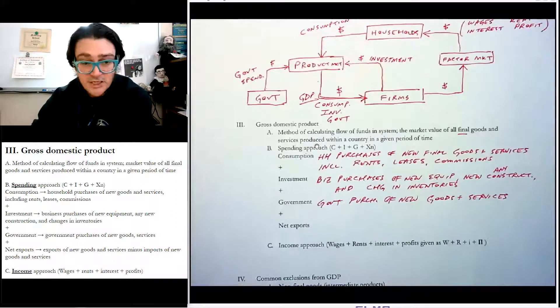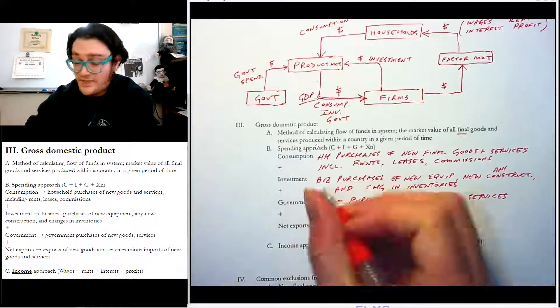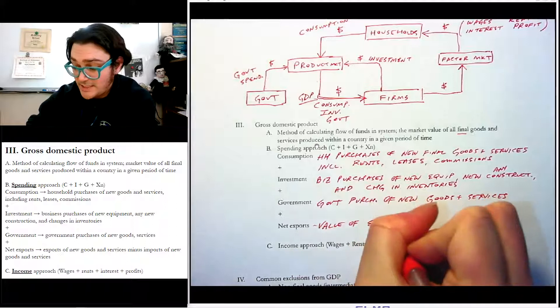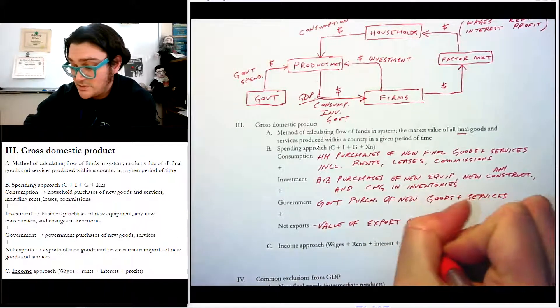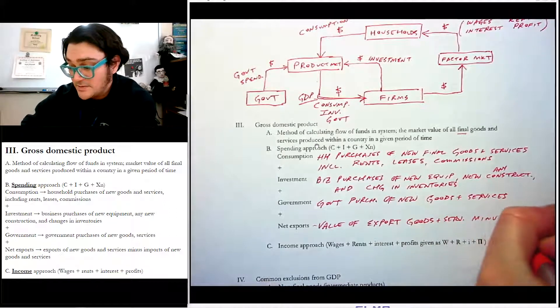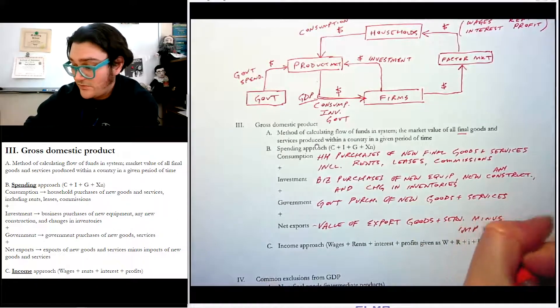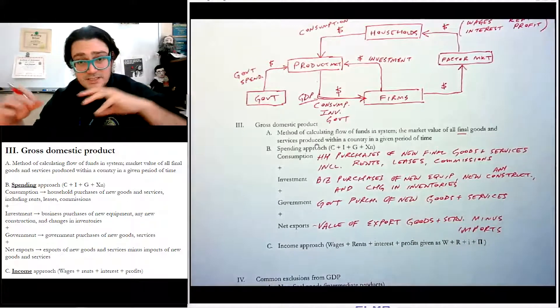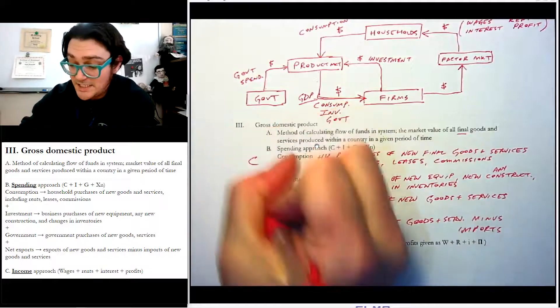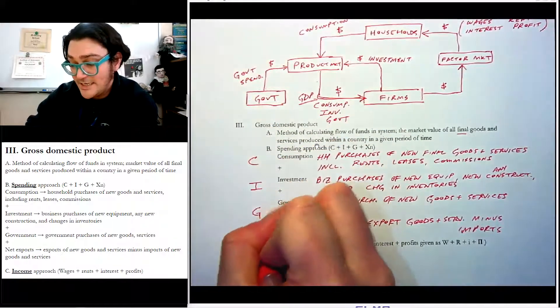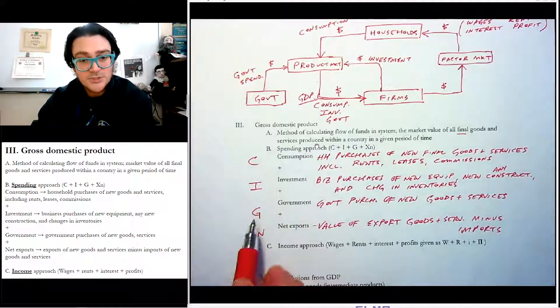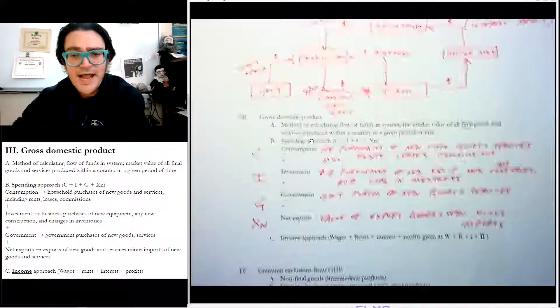Net exports. And these are the value of export goods and services minus imports. So it's really all that other stuff, but it's the exports minus the imports. So we call it net exports. By the way, these are abbreviated C, I, G, and X sub N. And so we use capital C, capital I, capital G, capital X sub N.